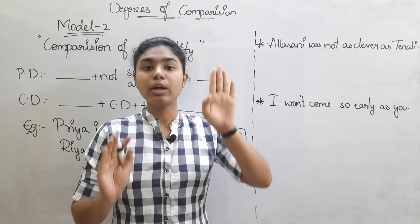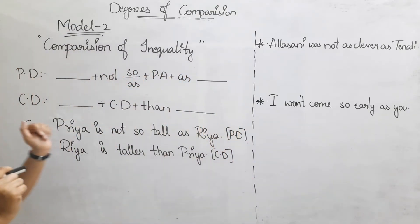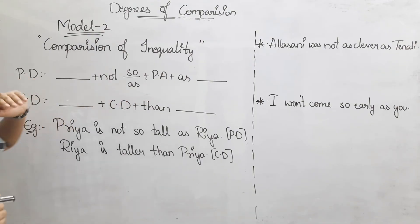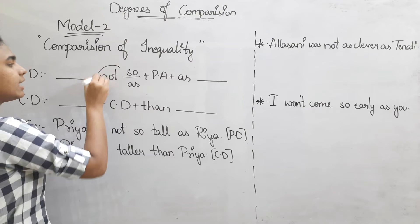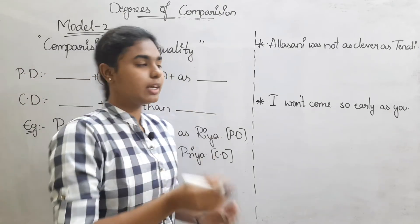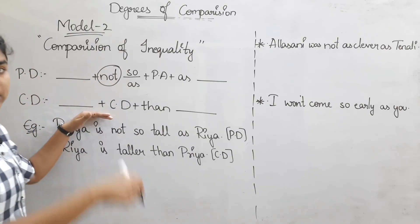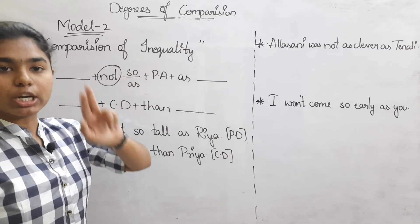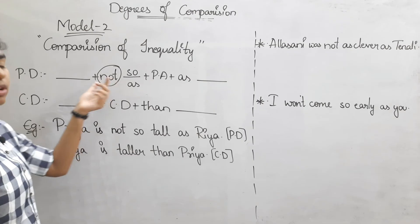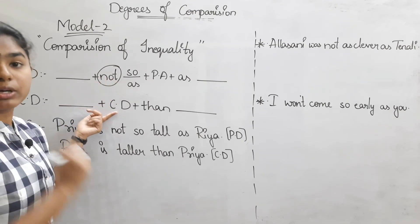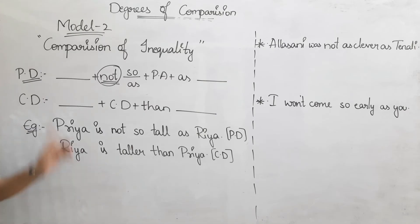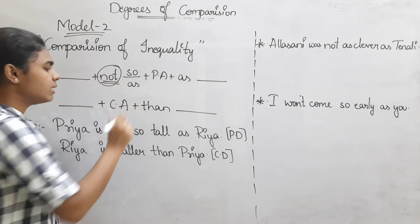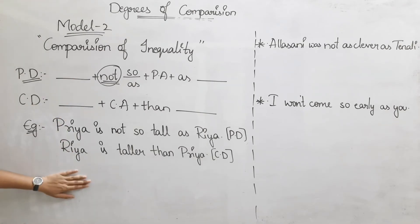So here we are talking about two equal things. Now the second model: the positive degree sentence is in the structure of 'not so + positive adjective + as,' and the comparative degree sentence is in the positive form using 'comparative adjective + than.' So the structure is: positive degree in negative form, comparative degree in positive form.